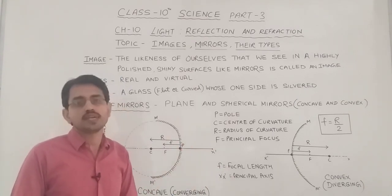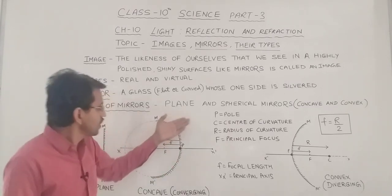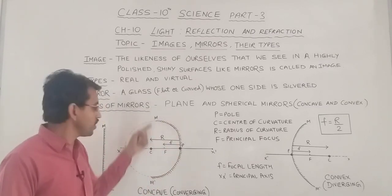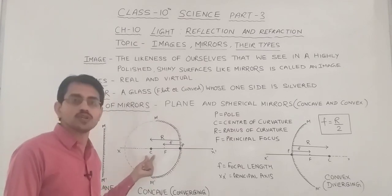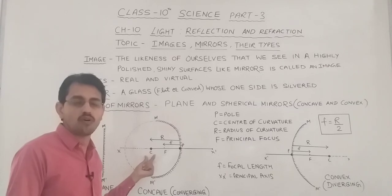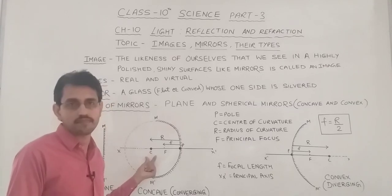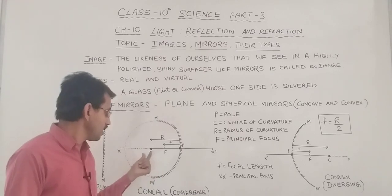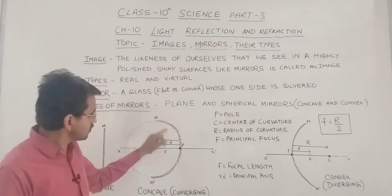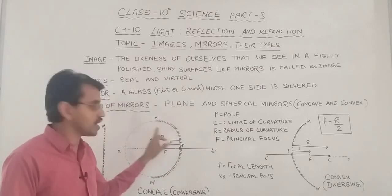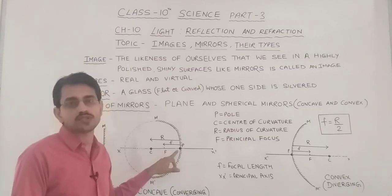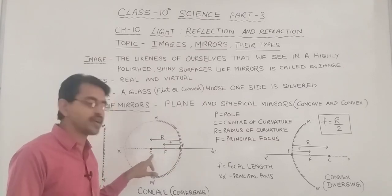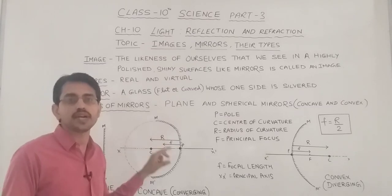Let us understand some important terms related to spherical mirrors. The center of the hollow sphere of which the mirror is a part is called the center of curvature. The midpoint of the reflecting surface of a spherical mirror is called the pole. The line joining the pole and the center of curvature is called the radius of curvature.